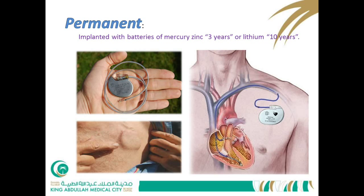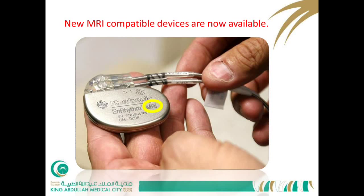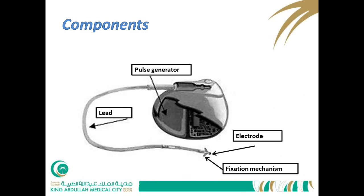New MRI-compatible devices are now available. An ordinary pacemaker has three components: the pulse generator housed in a casing implanted in the infraclavicular region; an electrode implanted inside the myocardium, either endocardium or epicardium; and a lead connecting the two parts together.